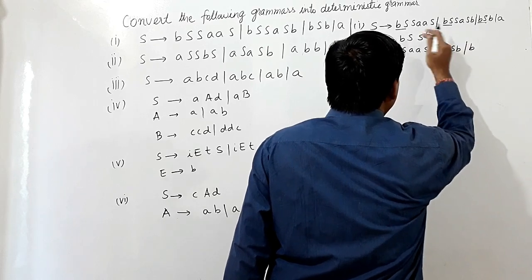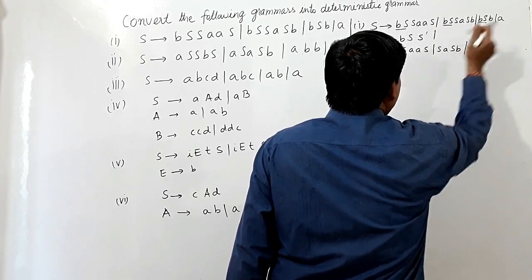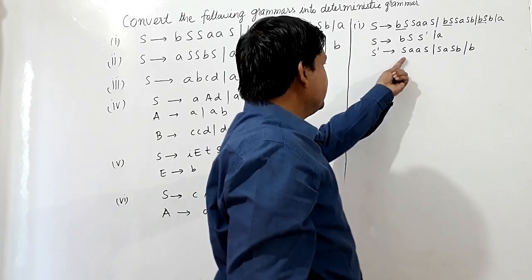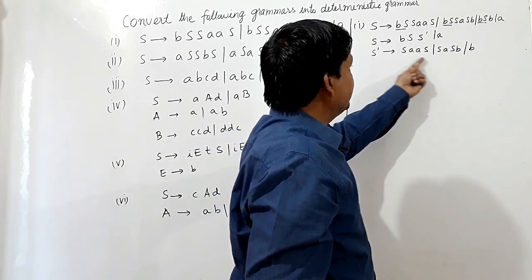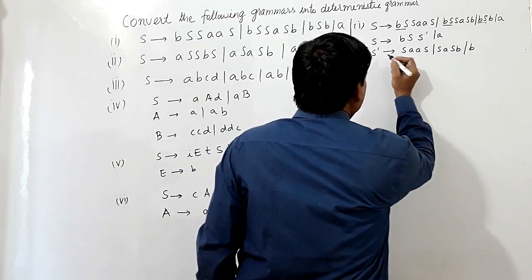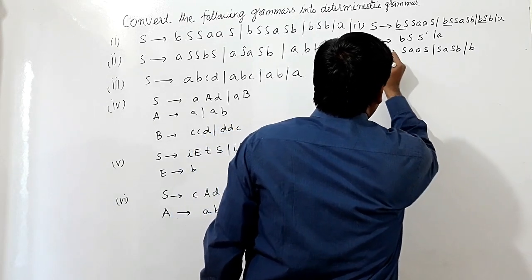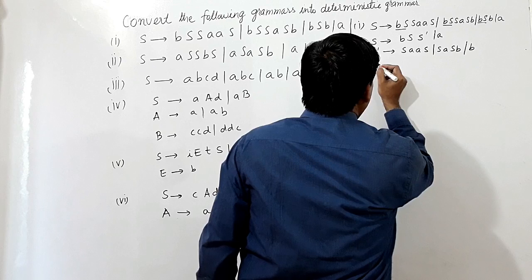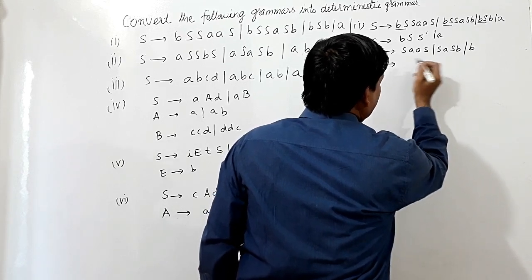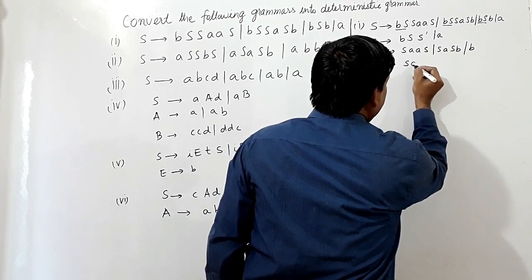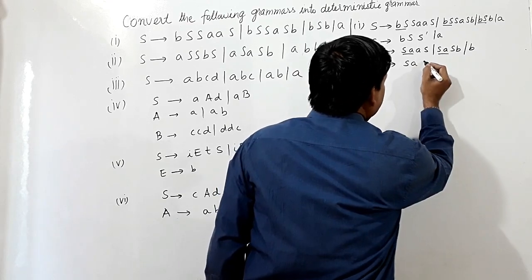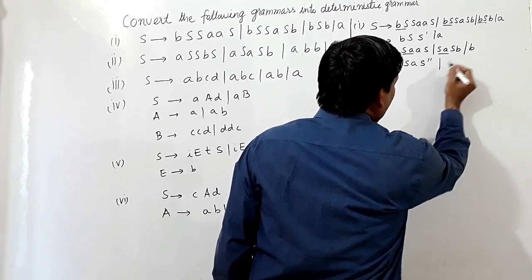And here is the remaining part, so I am writing A here. Now we can see SA, SA is common. So I will write for this production: S-dash can be written as SA, because S is common, giving SA S-double-dash or B.